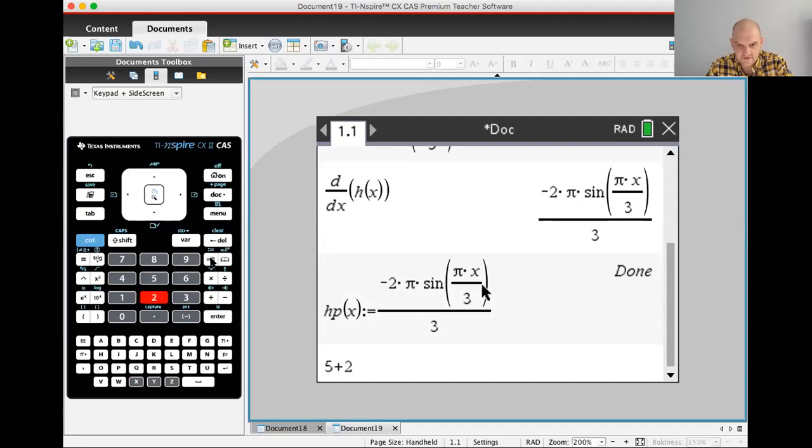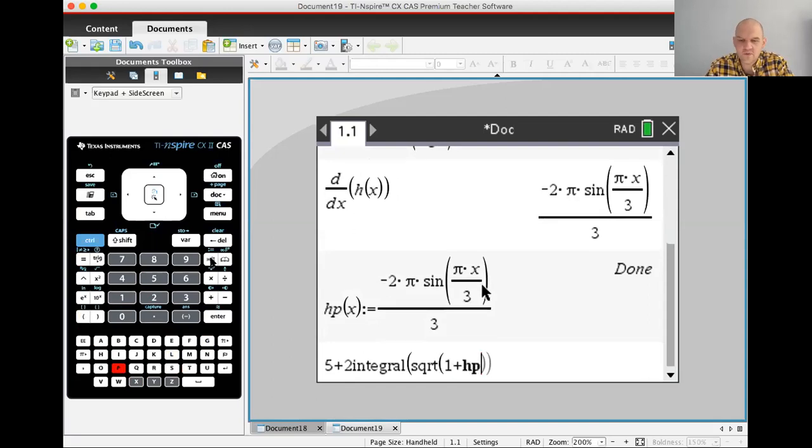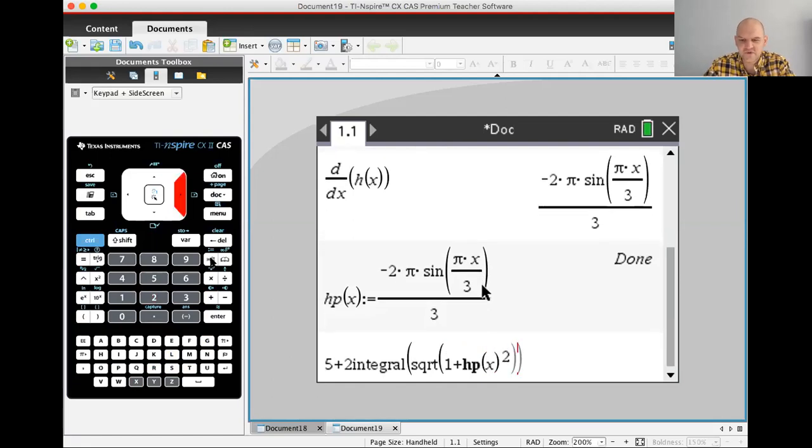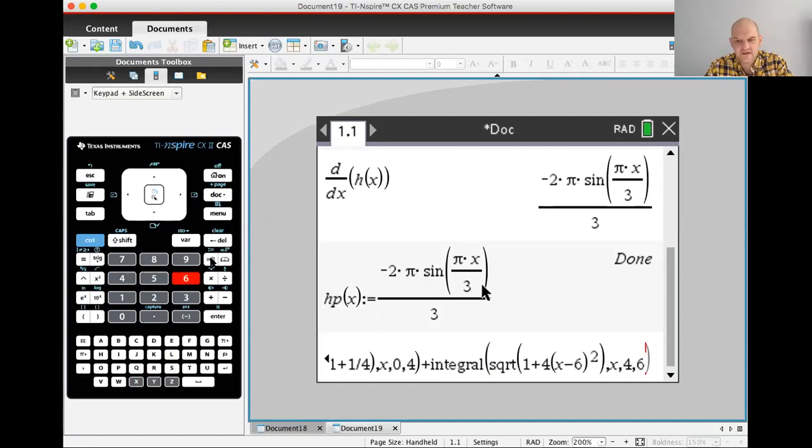Am I being lazy or am I trying? I'm trying to not be lazy and it's really backfiring. Zero to 1.5 plus integral square root. That's the killer plus one fourth. So now I'm trying to skip steps. Zero to four plus integral square root. One plus four quantity X minus six squared. Four to six.